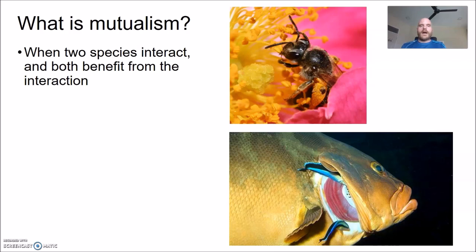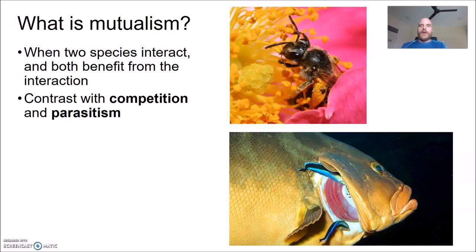So what is mutualism? At its most simple, we can describe it as a situation where two species interact and the outcome is beneficial for both species. We can contrast this with other kinds of interaction — for example, competition, where a pair of species interact but the outcome is negative for both.